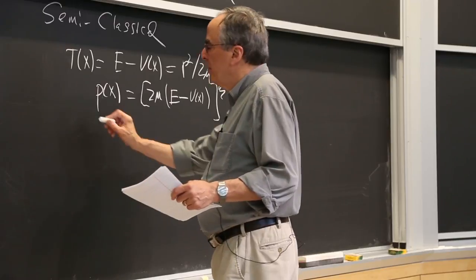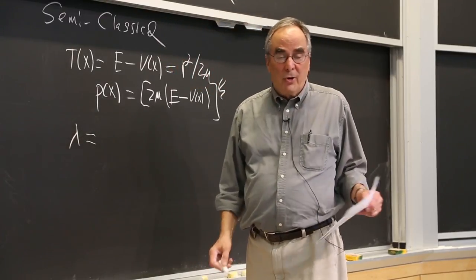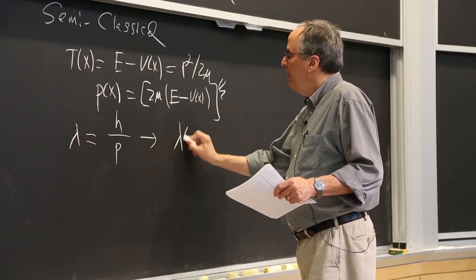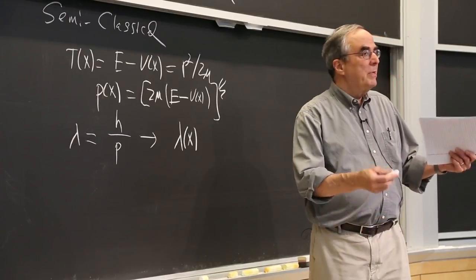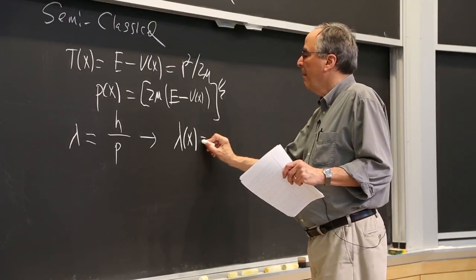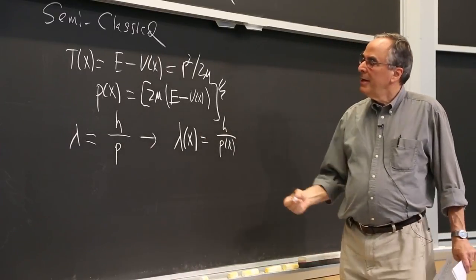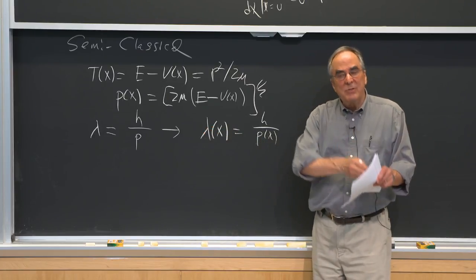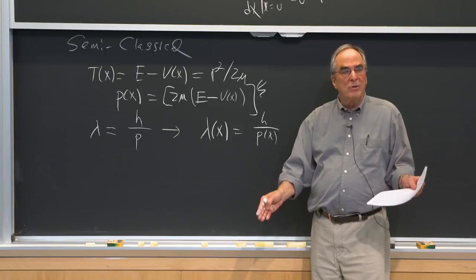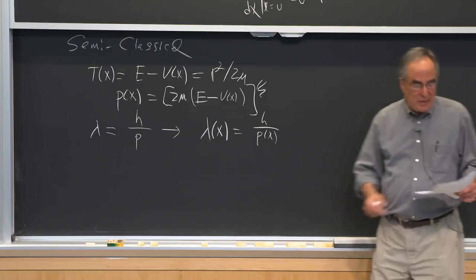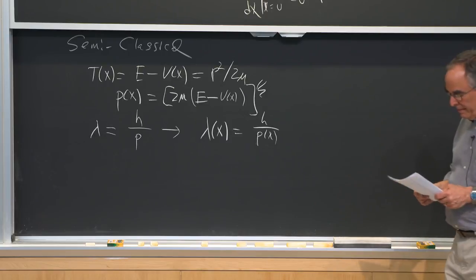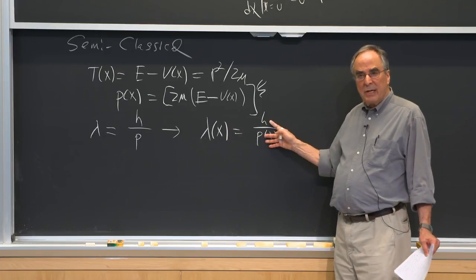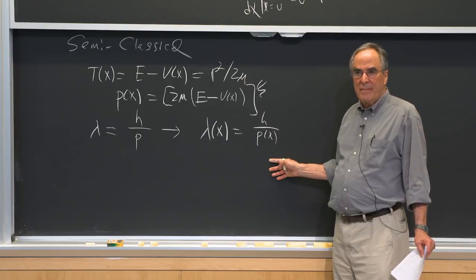In quantum mechanics, de Broglie told us the wavelength equals h/p. We can generalize and say the wavelength is a function of x for a non-constant potential. Even though p(x) is not an operator, it's true that the distance between consecutive nodes is λ/2. So we can use this node relationship to great advantage — for the pair of nodes closest to x, we can use this to calculate the distance between them.